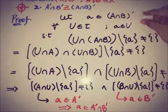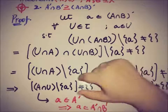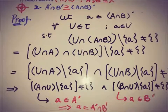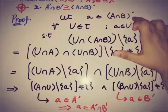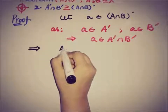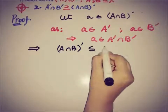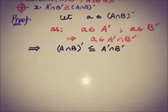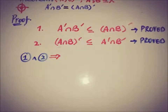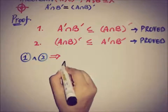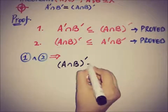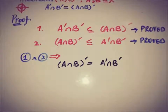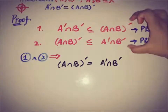We picked a from (A ∩ B)' and by using the definition we proved that a belongs to A' ∩ B'. So this implies that (A ∩ B)' ⊆ A' ∩ B'. Combining both parts: since A' ∩ B' ⊆ (A ∩ B)' and (A ∩ B)' ⊆ A' ∩ B', both sets are equal. Therefore A' ∩ B' = (A ∩ B)', and the theorem is proved.